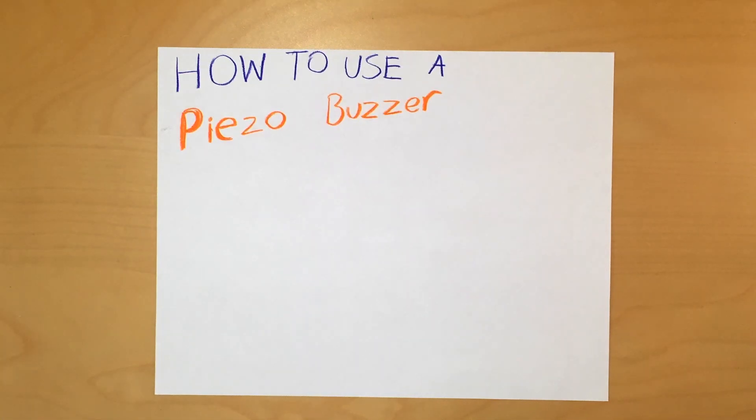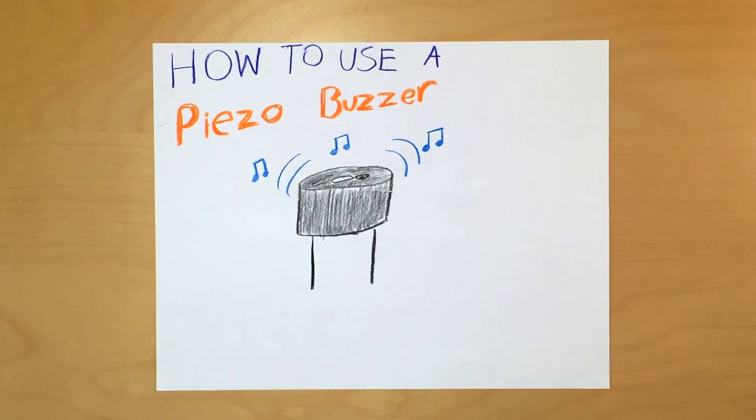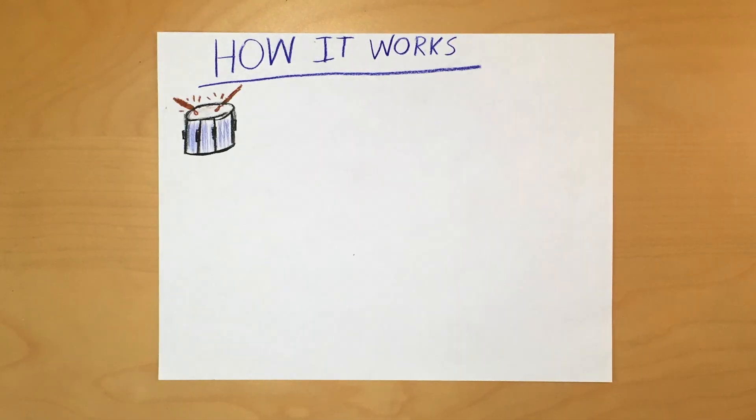Today I'm going to teach you how to use a piezo buzzer with Arduino to make noise. Piezo buzzers work kind of like a drum. The drum has a membrane that is struck by a drumstick, causing it to vibrate and produce noise.